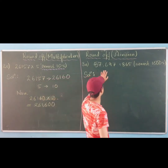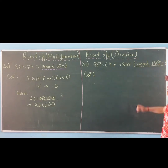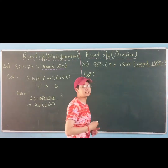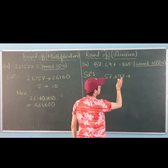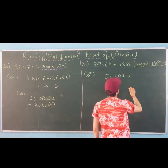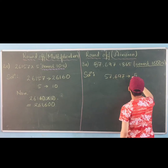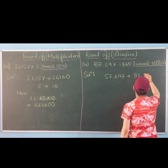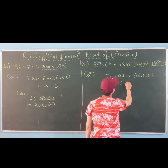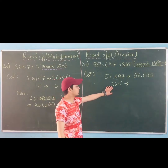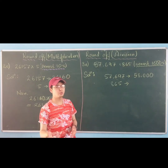Now moving on to the next question — rounding up of division to the nearest thousands. You have to round it up to the nearest thousands in the same way. So 57697, when you round up to the nearest thousand — you have to look at the digit which is in the hundreds place. Whenever you are changing to the nearest thousand, you look at the hundreds place; whenever changing to the nearest hundred, you look at the tens place.